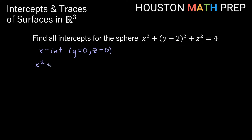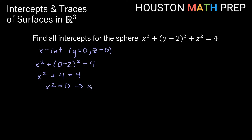That leaves us with x squared plus (0 minus 2) quantity squared plus 0 equals 4. We get negative 2 squared, which leaves us with x squared plus 4 is equal to 4. Subtracting 4 from both sides gives us x squared is equal to 0. Square-rooting both sides tells us x is equal to 0. So with x, y, and z all equal to 0, our x-intercept is going to be (0, 0, 0). Now (0, 0, 0), the origin, actually lies on all of the axes, giving us some intuition that this point should also appear as a y-intercept and a z-intercept.